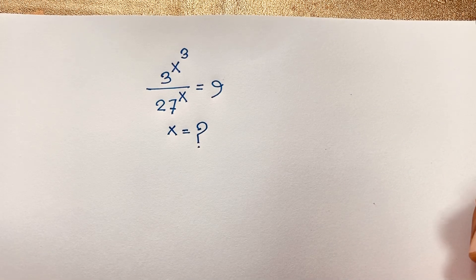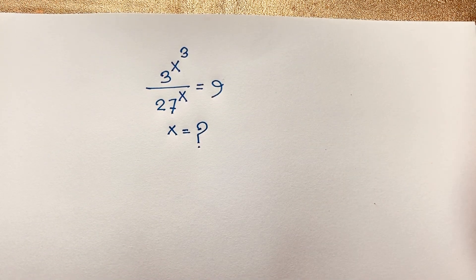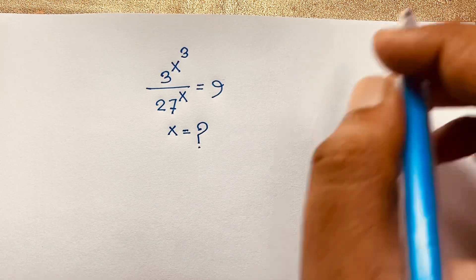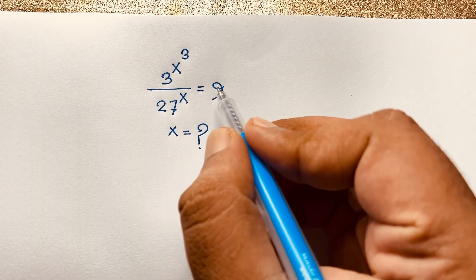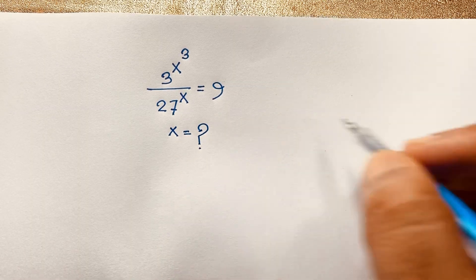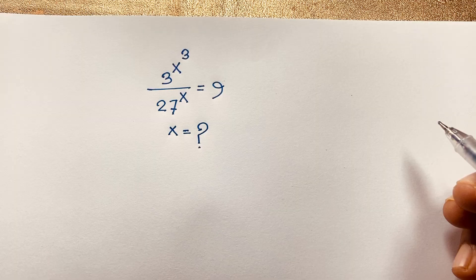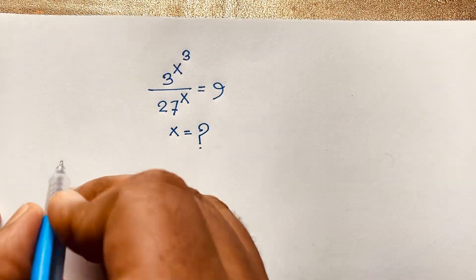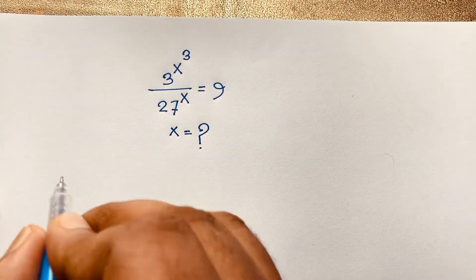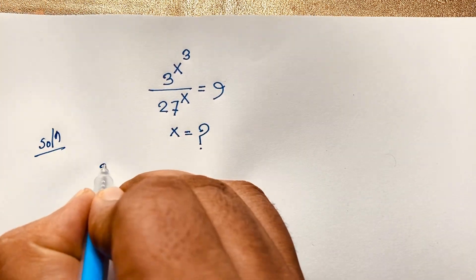Welcome to Russia's Classroom. Today we have solved an interesting viral exponential math problem. The question is: 3 to the power x cubed over 27 to the power x is equal to 9. What is x? How to solve this interesting exponential math problem? First of all, I can see this expression in our math solution here.